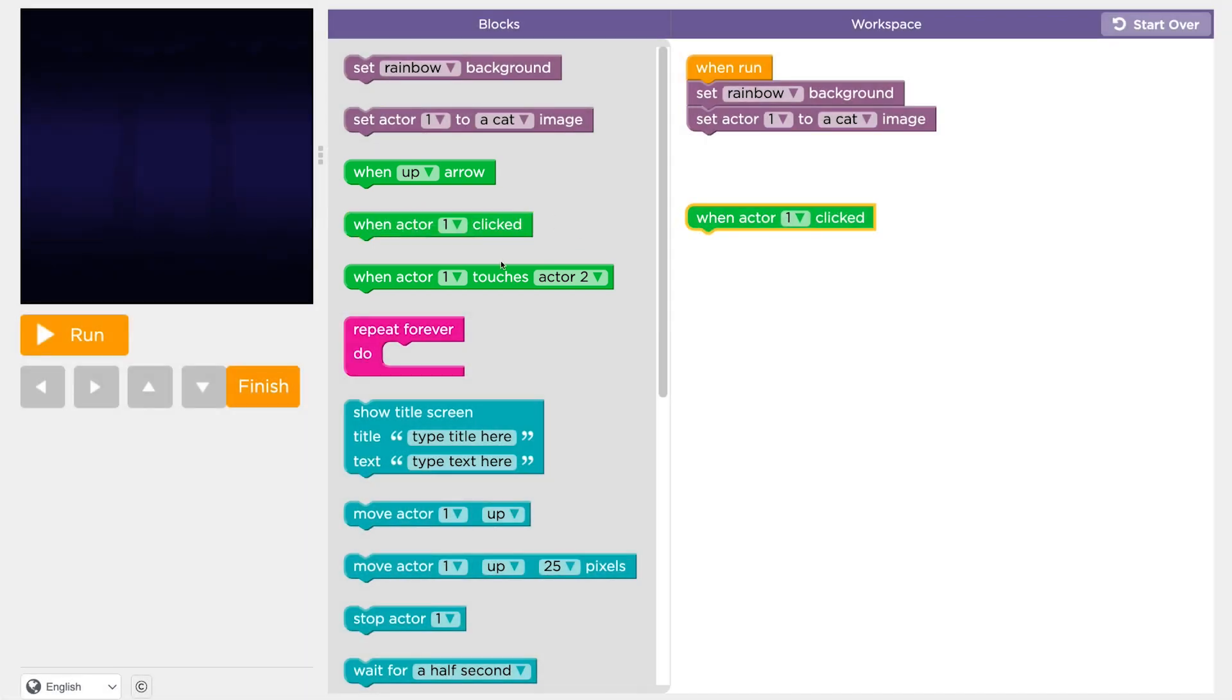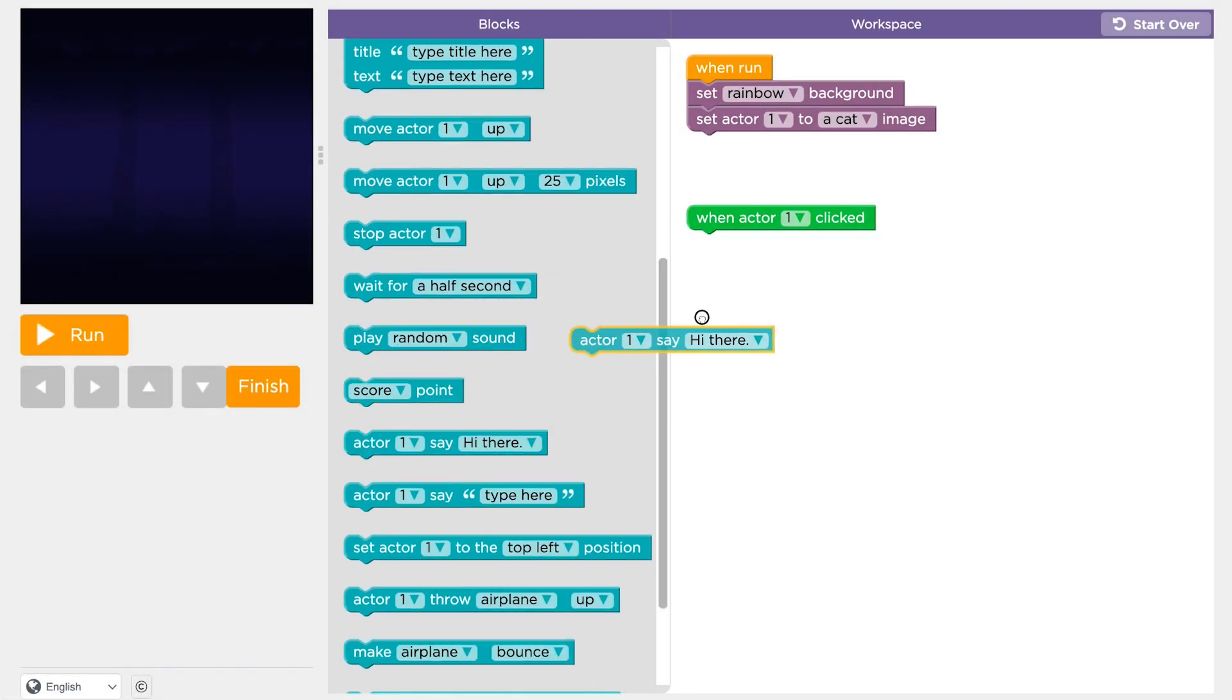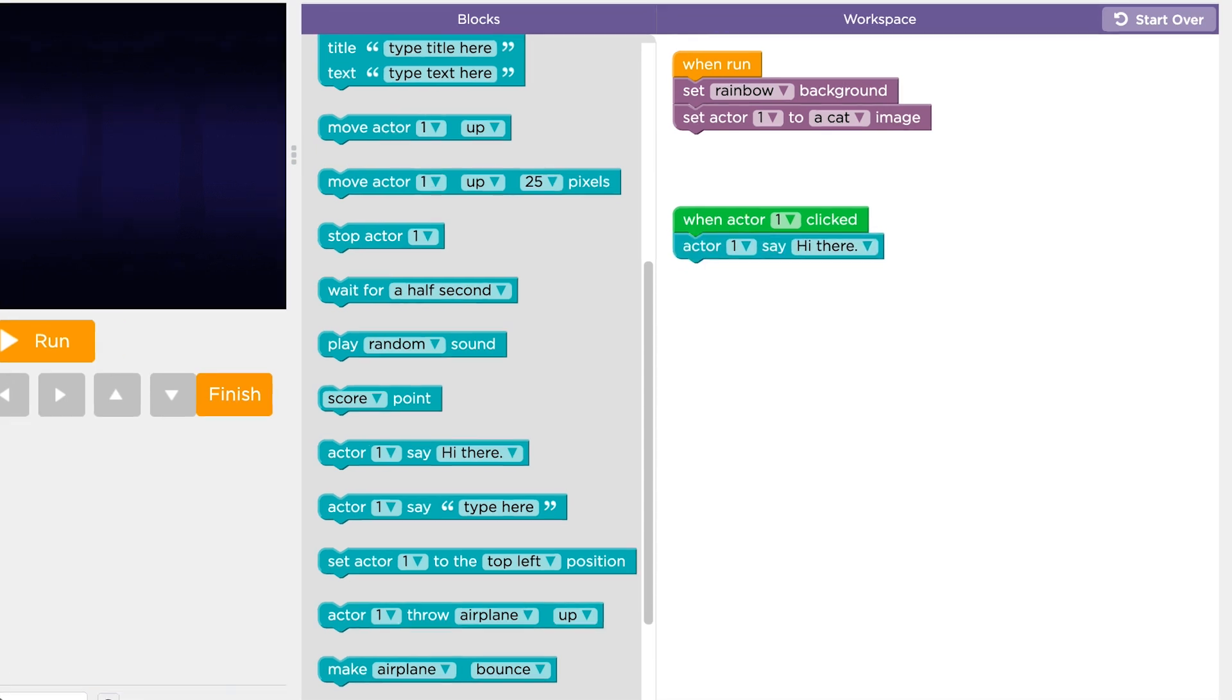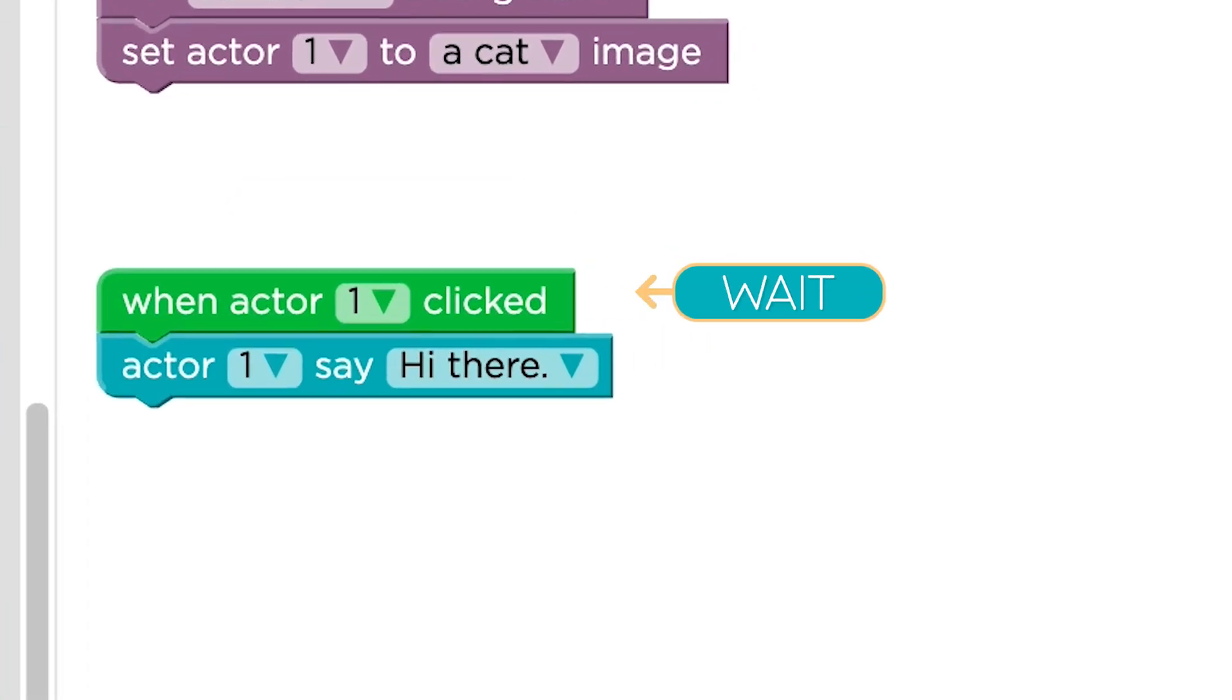When we code with events, we're telling the computer to wait for something to happen and then respond right away.